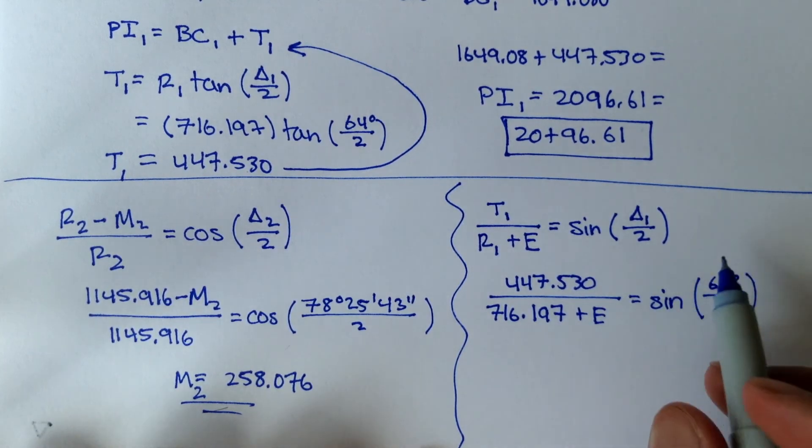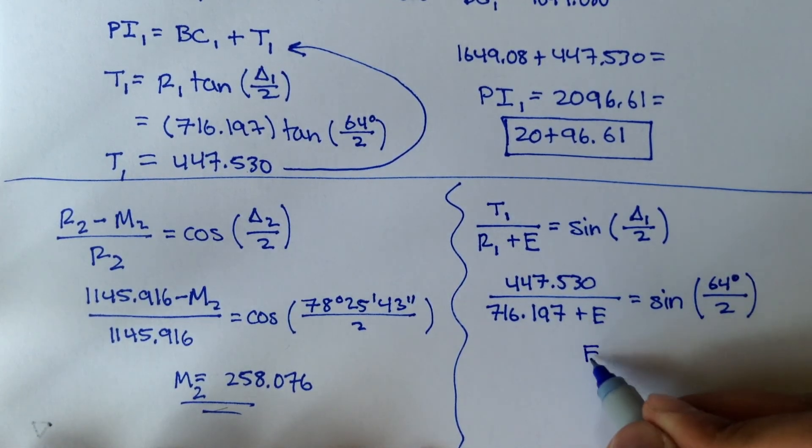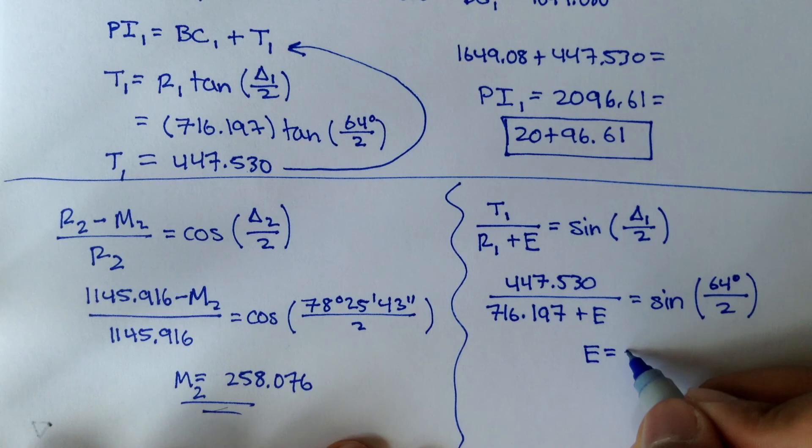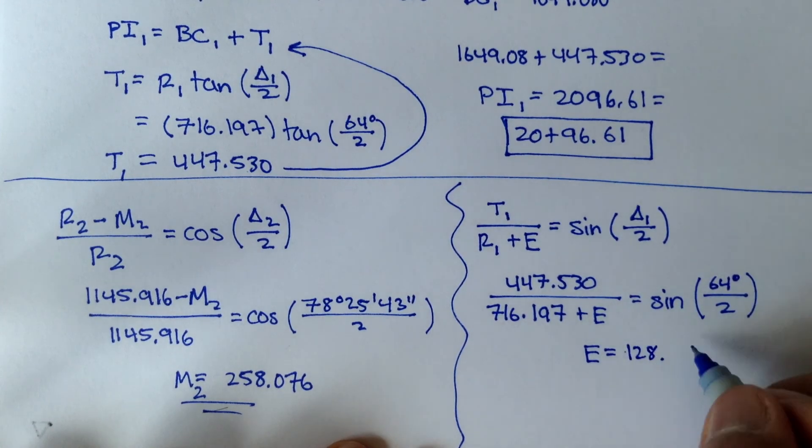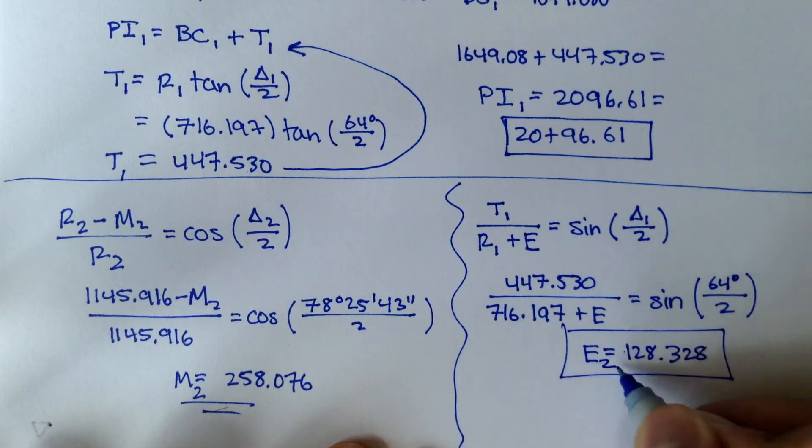So you plug all of this in, and if you solve for E, you should get 128.328. So that's the external distance for curve 2. We figured out the middle ordinate for curve,